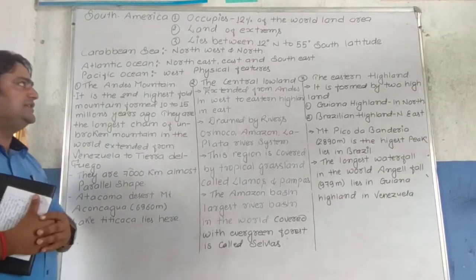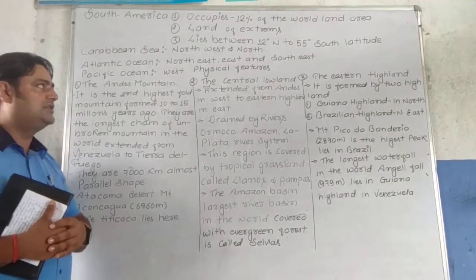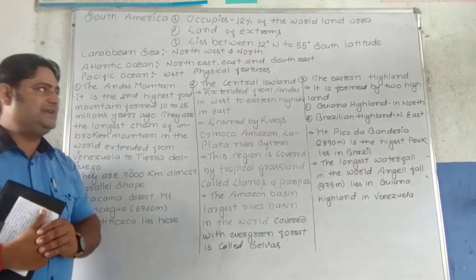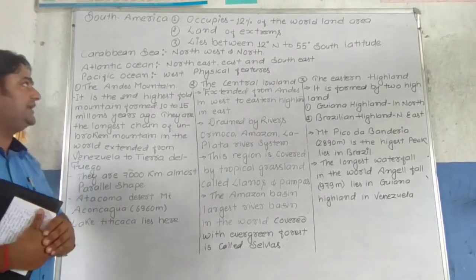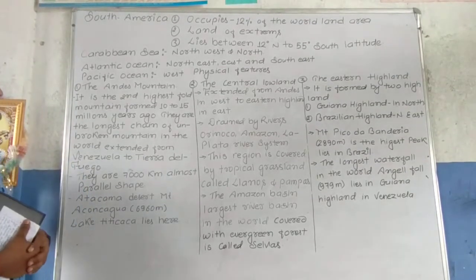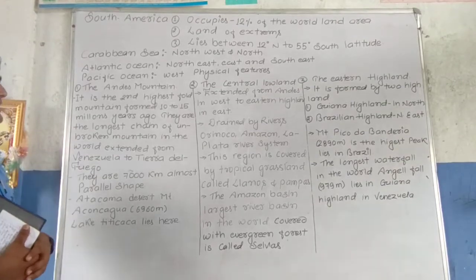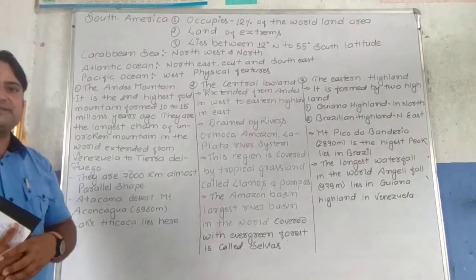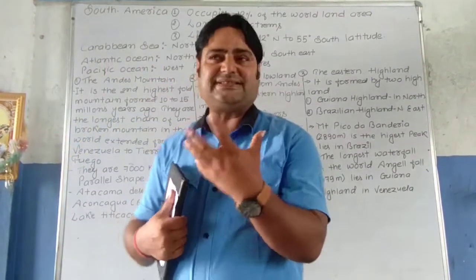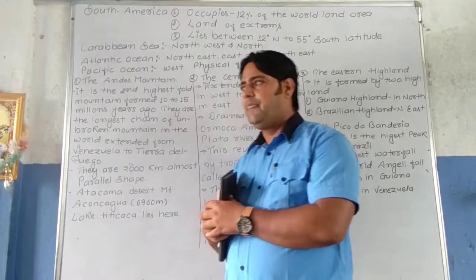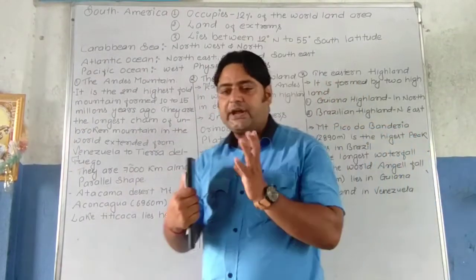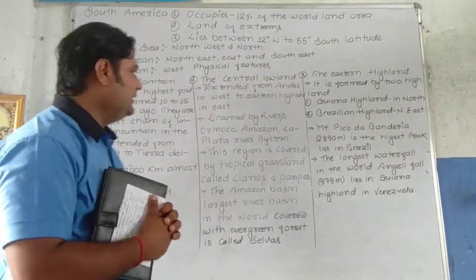The Atlantic Ocean lies in the northeast, east, and southeast parts of South America, and similarly the Pacific Ocean lies on the western side. So these are the basic information about the location of South America.